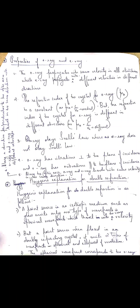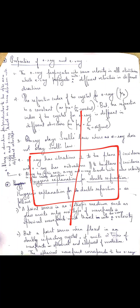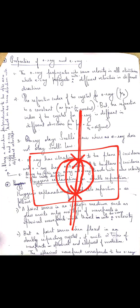Huygens stated that along the optic axis, both wavefronts — the spherical and the ellipsoidal — will touch each other, so there will be no double refraction along the optic axis. Whereas in all other directions, the two wavefronts are separate, resulting in double refraction. Along the optic axis, the spherical and ellipsoidal wavefronts touch each other, so there is no double refraction. In all other directions, they do not touch, and double refraction occurs. This was the explanation given by Huygens for double refraction.